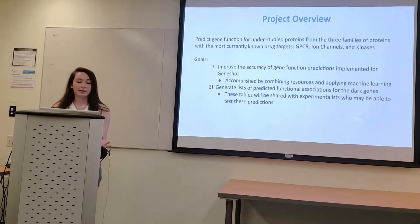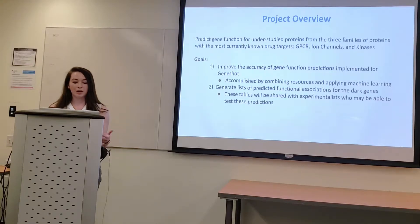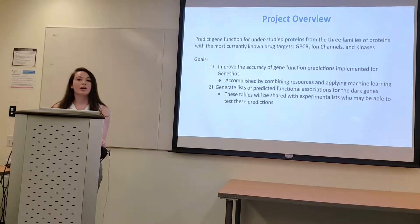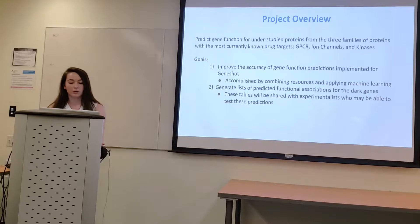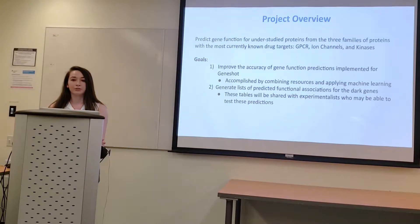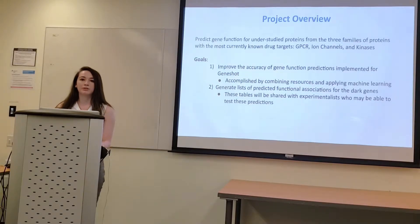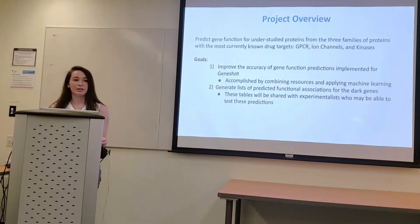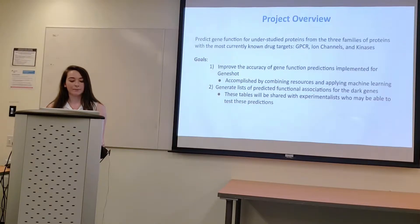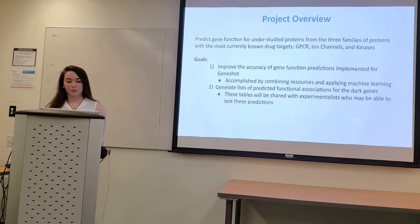My project this summer was predicting gene function for understudied proteins for the three families with the most currently known drug targets — GPCRs, ion channels, and kinases. The first goal was to improve the accuracy of these predictions, accomplished through combining resources, taking in different features, and applying machine learning to the problem. From this, a static list was created with the terms.